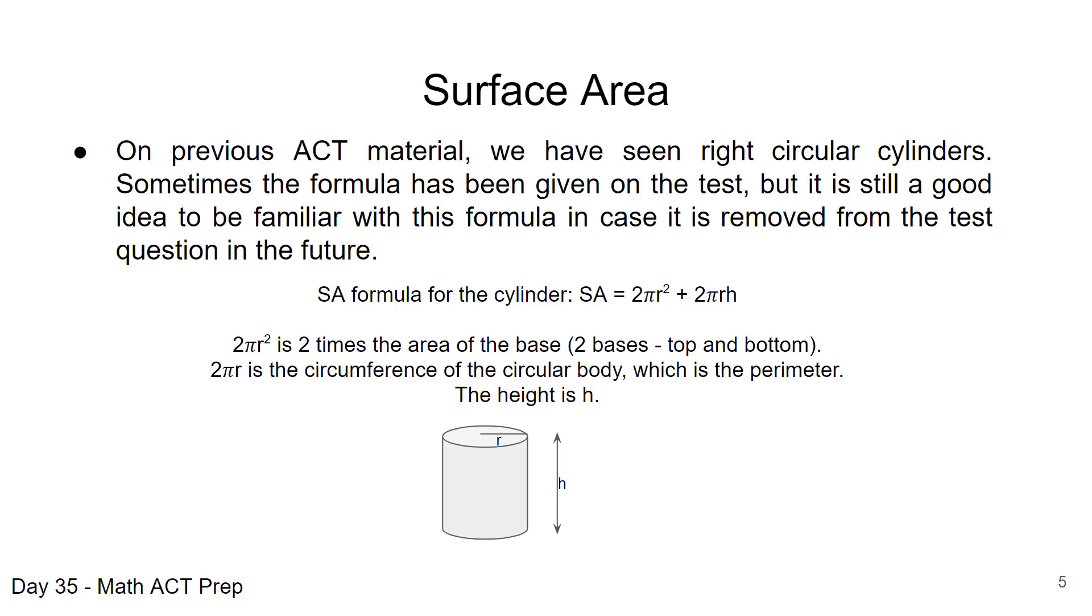And how many of those we have, we have h of those circles going around the height. So that's why the second portion of the surface area, the 2πrh, we multiply that circumference by h. So given the values of radius and height, we can find the surface area of a right circular cylinder.